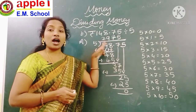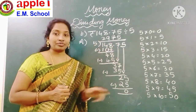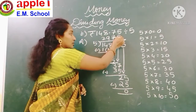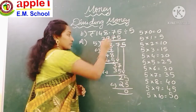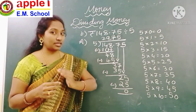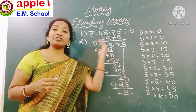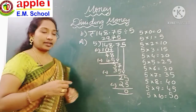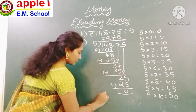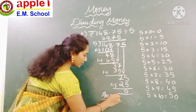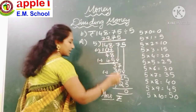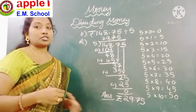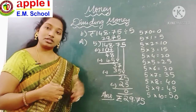In the dividend, there is a point before the last two digits, so here also put the point before the last two digits — count 1, 2 from the right. The digits before the point are rupees and the digits after the point are paise. The answer is 29 rupees 75 paise. Understand, children, how to do division in money.